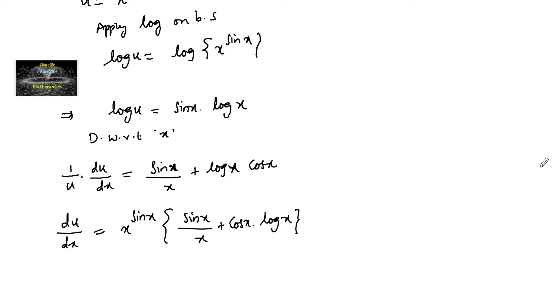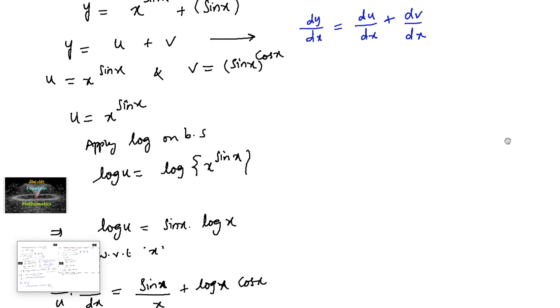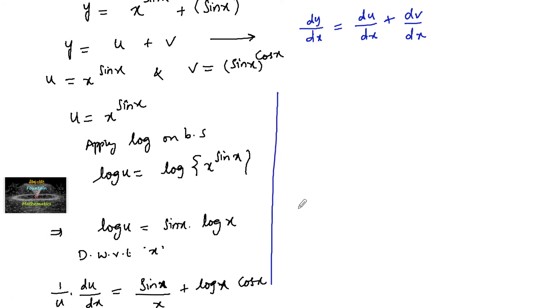So we have du/dx = x to the power of sin x into (sin x upon x plus cos x into log x). This is du/dx. Now let us find dv/dx, where v = sin x to the power of cos x.